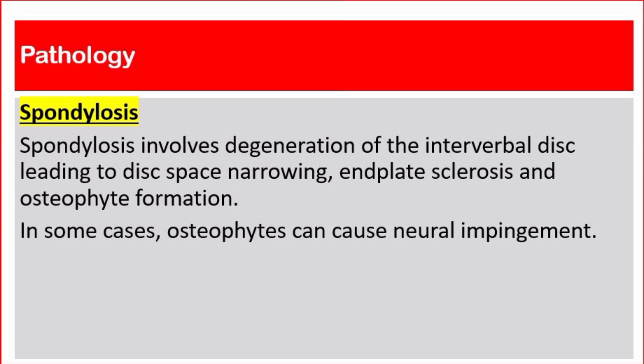The second pathology is spondylosis. Spondylosis involves degeneration of the intervertebral disc leading to disc space narrowing, end plate sclerosis, and osteophyte formation. In some cases, osteophytes can cause neural impingement.